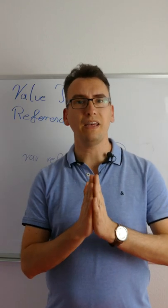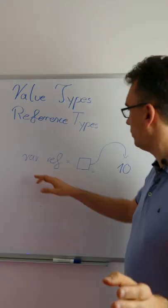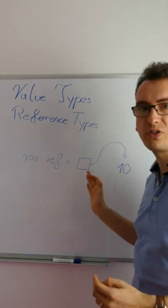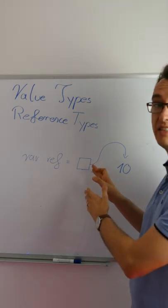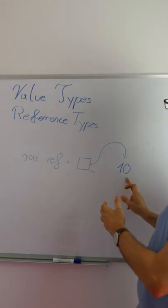In the next example we make an example for reference types. So we have a variable ref which is this little box. And this little box is our address in our memory. And we linked it to our value.